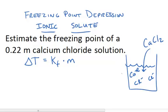So, although the concentration of the formula unit, calcium chloride, is equal to 0.22 molal, the actual concentration of the ions is what matters here, because it's not the what, it's the how much.